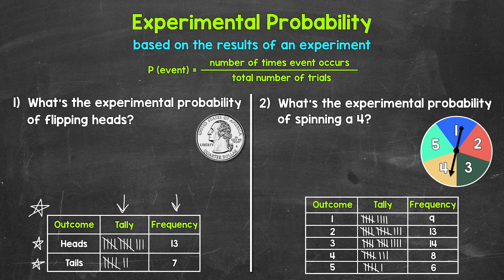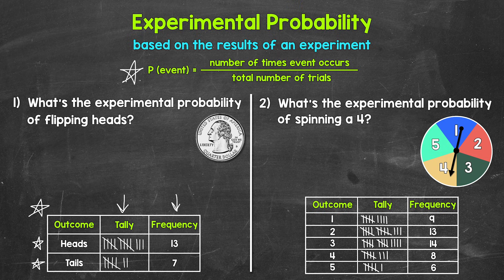So we're going to use this information for our experimental probability. Our formula for experimental probability is right here. We have P for probability, and then in parentheses we have event. And an event is whatever we are finding the probability of. Basically, an event can be one or more outcomes that we are interested in and focused on. The probability of an event equals the number of times the event occurred over the total number of trials.